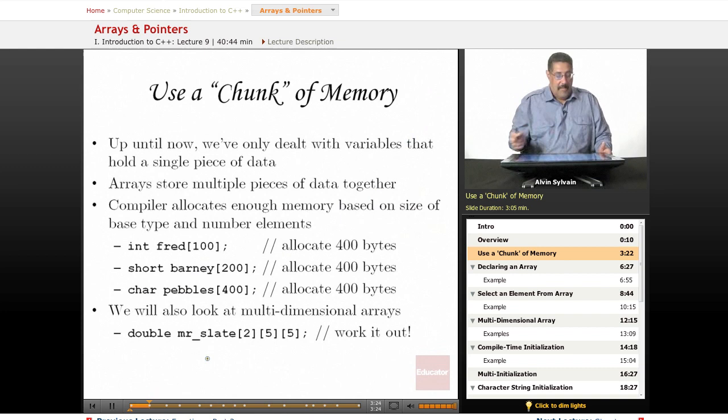Up until this lesson, we've been dealing with a variable that has one memory location. You can have int a equal to 7, and the compiler would say, okay, let's put a little chunk right here, we're going to call that a, and we'll put a 7 in there. It's a single piece of data.